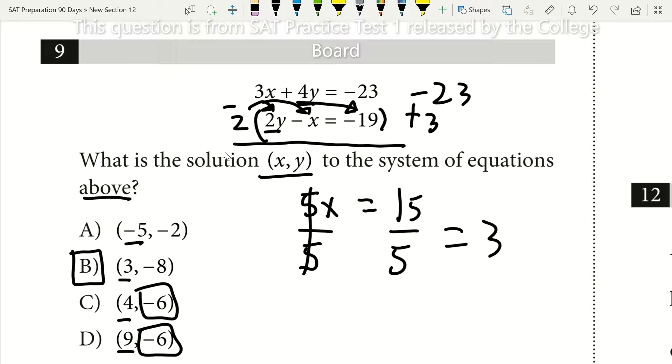So anytime that I see a stacked equation set like this and I'm asked to solve for the solution x, y, that's what I'm going to look to do. I'm going to look to add or subtract my bottom equation from my top equation in order to get rid of one of my variables and solve for the other variable. And then by solving for that other variable, if I'm smart about it, oftentimes I'll be able to get my correct answer choice without even solving for the other one.